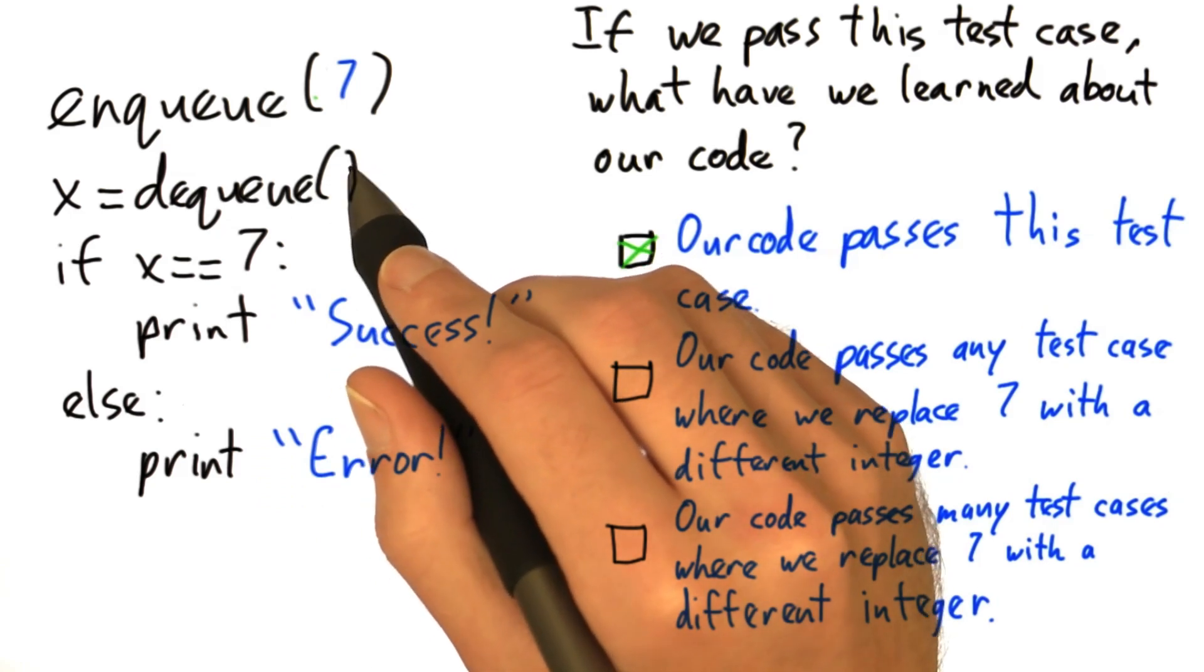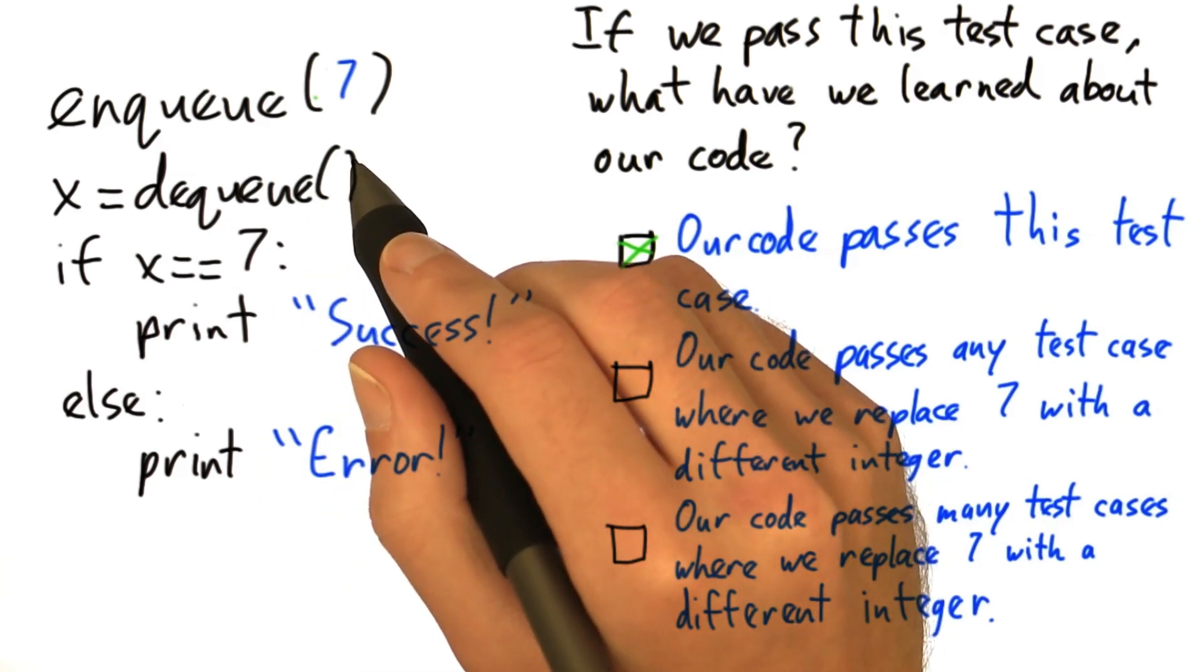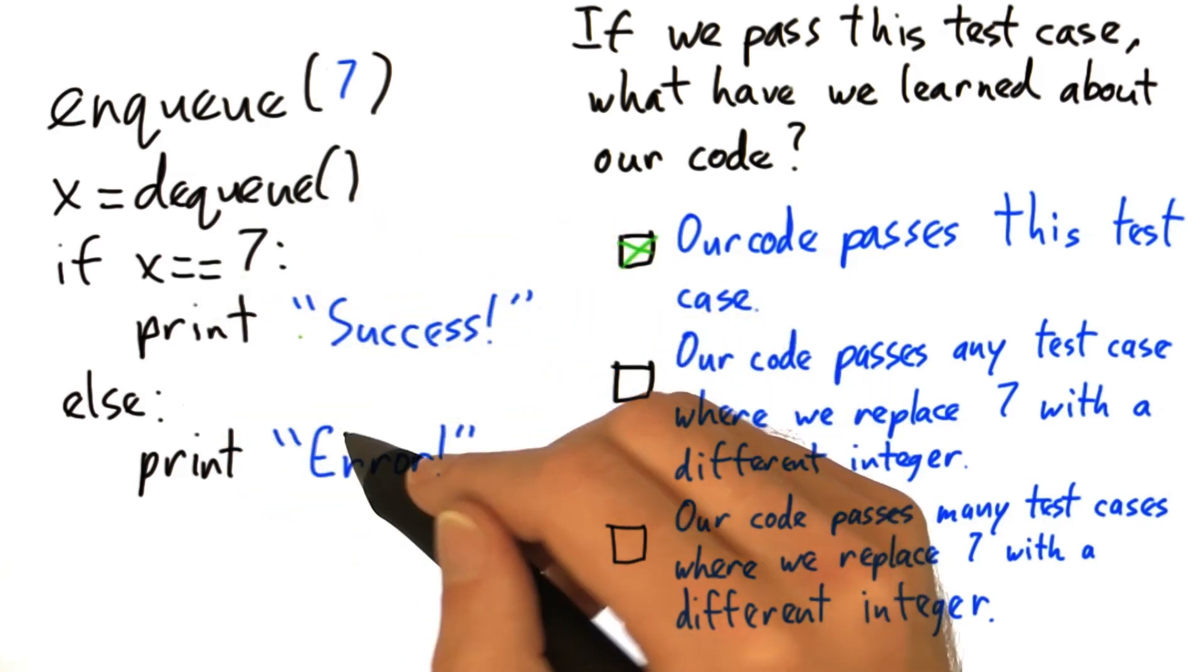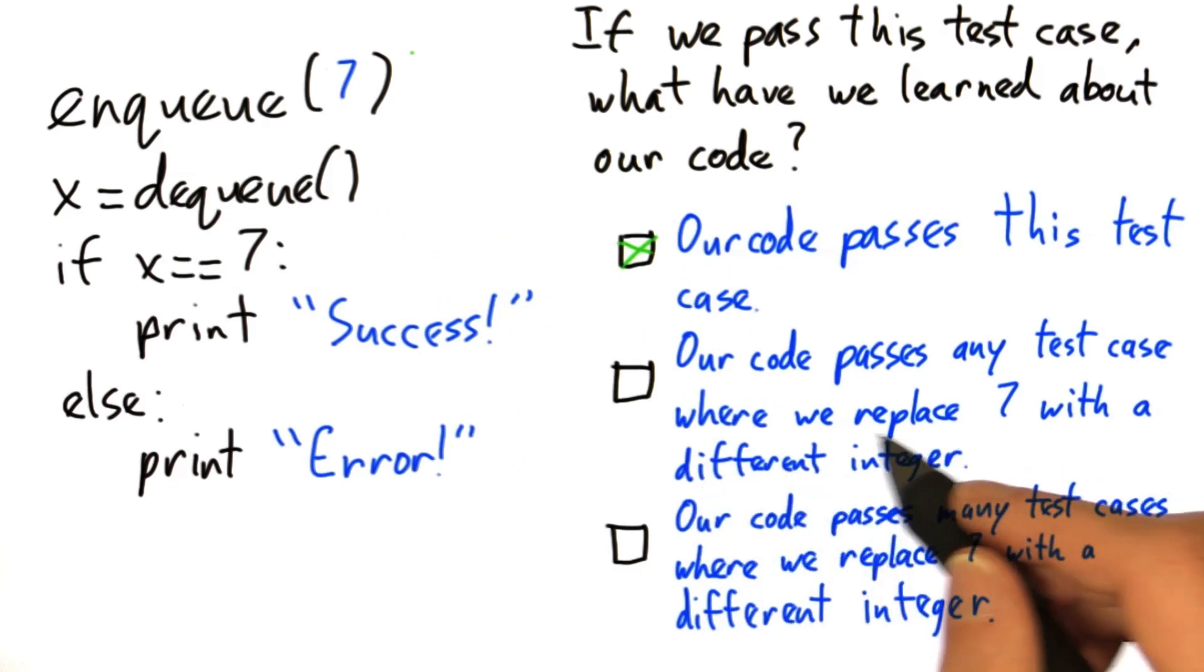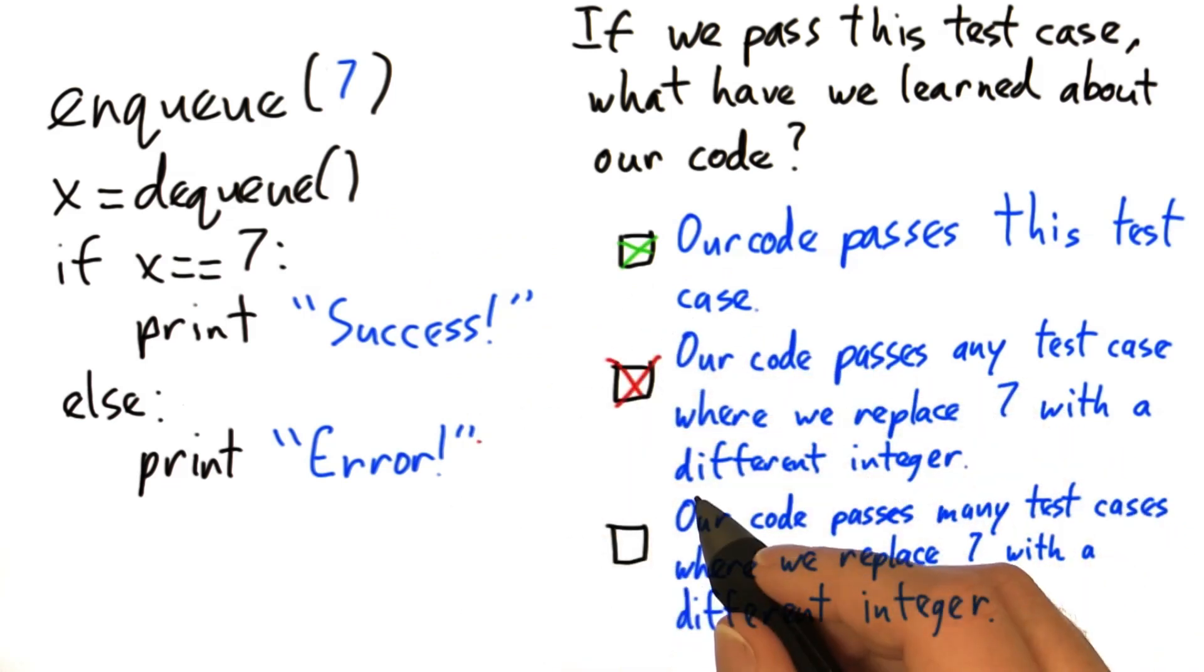If you replace 7 with a gigantic integer, something that you can't even store on your computer, it's so big, then you're probably not going to get the same behavior out of this test case as with something simple like 7. So we can't necessarily say this. I would say that is wrong.